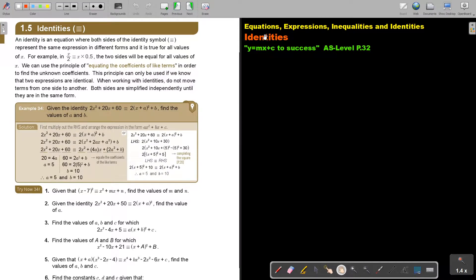In this video, we are going to focus on identities. You will find this on page 32 in the Namibia AS level mathematics textbook, Y equals MX plus C to success.